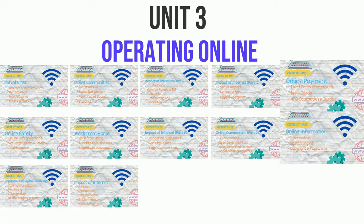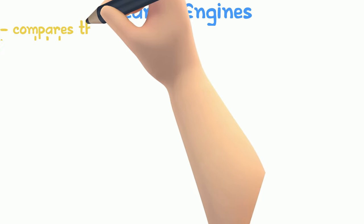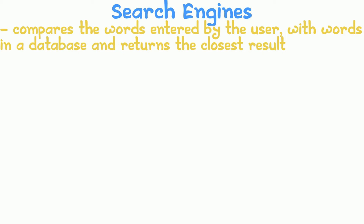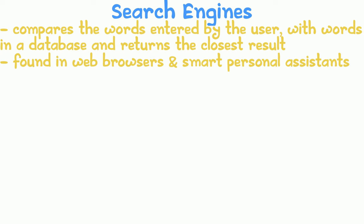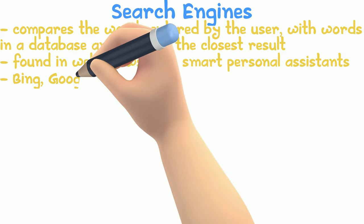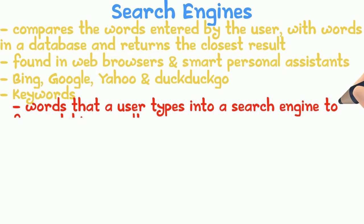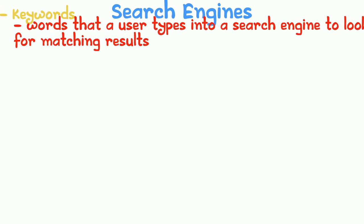From the third chapter we also got requests on search engines. Search engines compare words entered by the user against a database and display the closest results. They are found in web browsers and smart personal assistants like Alexa and Siri. Examples include Bing, Google, Yahoo, and DuckDuckGo. Features: Keywords are the words a user types to look for matching results — enter only important keywords to keep it simple. Search types allow users to specify the type of information, such as images, vectors, or clipart.